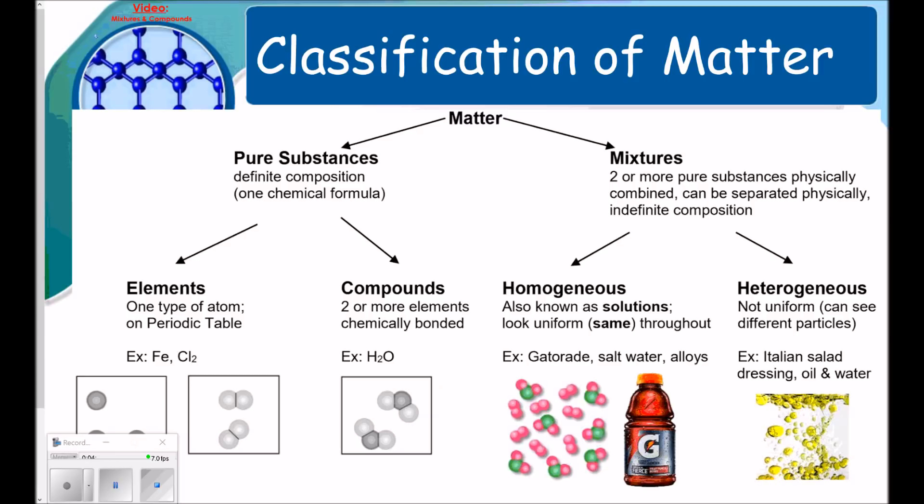So classification of matter. I need you to be able to classify matter and to know the different types. We have two different types that we're going to talk a lot about in chemistry. We've got pure substances and mixtures. Let's talk first about pure substances. Pure substances have what we call a definite composition, meaning one chemical formula.